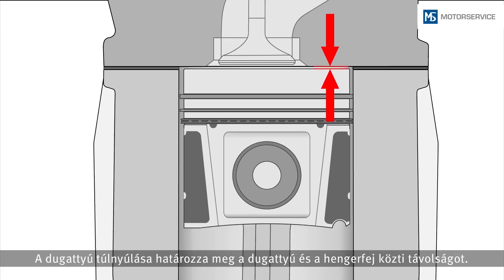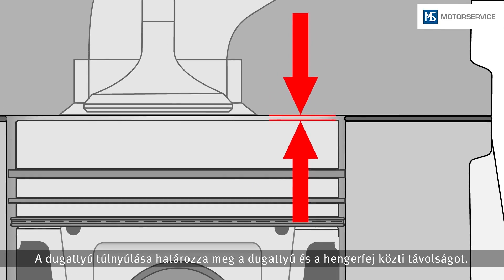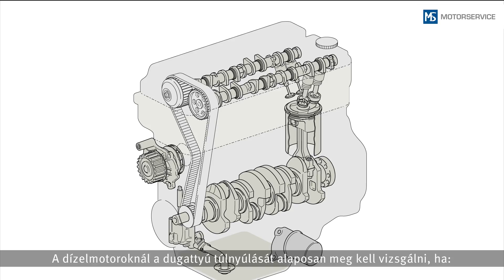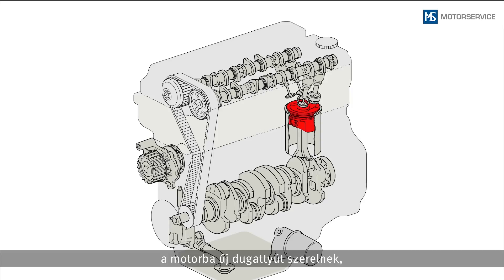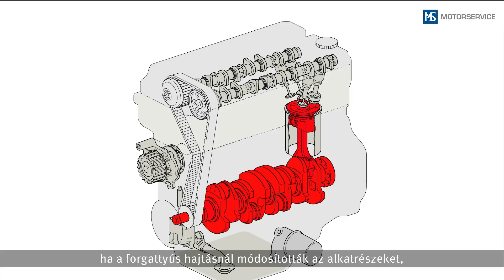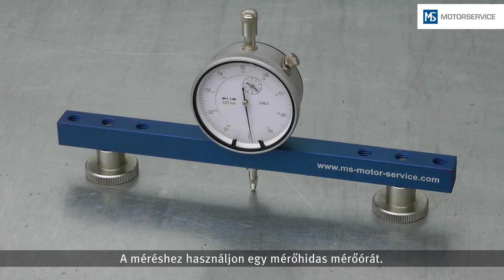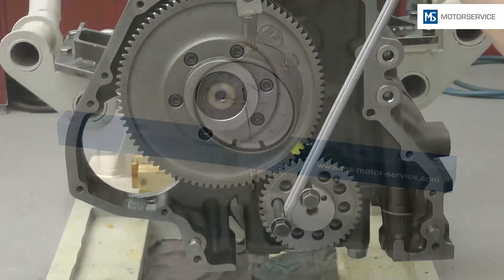The piston protrusion defines the distance between the piston and cylinder head in diesel engines. The piston protrusion must always be checked if new pistons have been installed, if engine parts on the crank mechanism have been modified, or if the face of the engine block has been reworked. A dial gauge with a measuring bridge is used for measurement.